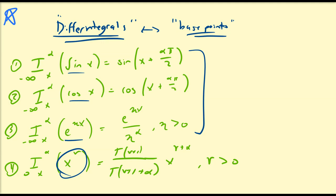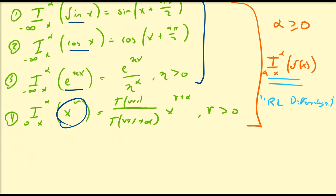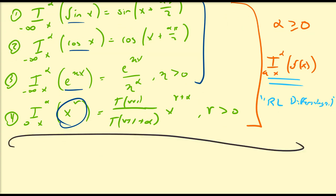Before we get into the actual discussion of the base point of differintegrals, I want to make one clarification. All of these identities are true, and we've proven them for alpha greater than or equal to zero — the order of the integration. This notation I_a^x alpha of f of x has so far been the Riemann-Liouville differintegral of function f. There are of course other differintegral definitions, for example the Grünwald-Letnikov, which we've already discussed, and others such as Caputo that we'll get into later.